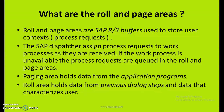What are the roll and page areas? Roll and page areas are SAP R3 buffers used to store user context for process requests. The SAP dispatcher assigns process requests to work processes as they are received. If a work process is unavailable, the process requests are queued in the roll and page areas. The paging area holds data from application programs; the roll area holds data from previous dialogue steps and data that characterizes the user. For more detail, refer to the video on real-time 3-tier architecture.